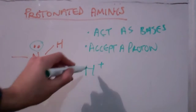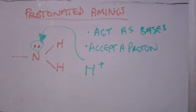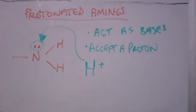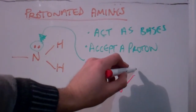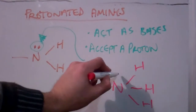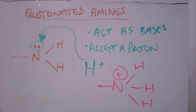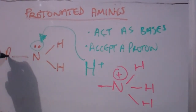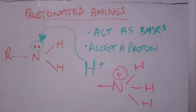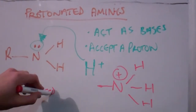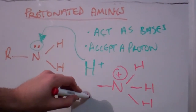When an amine accepts a proton, the product we end up with is kind of like ammonia accepting a proton and becoming the ammonium ion — except we've got a carbon chain. We call this a substituted ammonium ion.